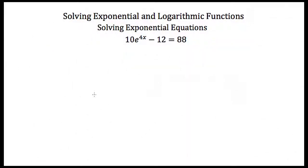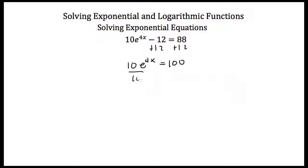So now let's try solving some exponential equations. Here we have 10 times e to the 4x minus 12 is equal to 88. Because I have a base of e, the one-to-one property won't be easy to use. So instead I'm going to get all the exponential terms alone on one side of the equal sign. First I add 12: that gives 10 times e to the 4x equals 100. Divide both sides by 10 and I have e to the 4x is equal to 10.